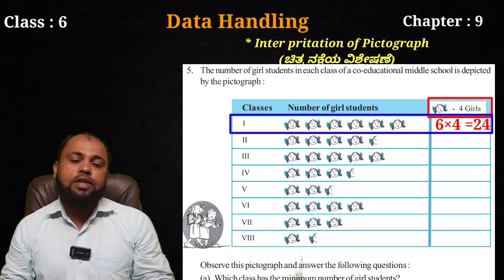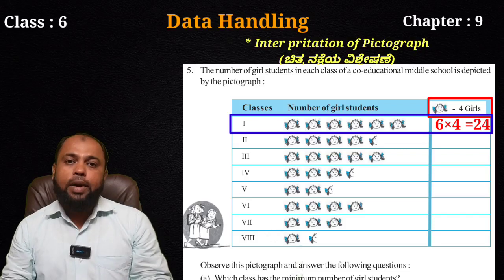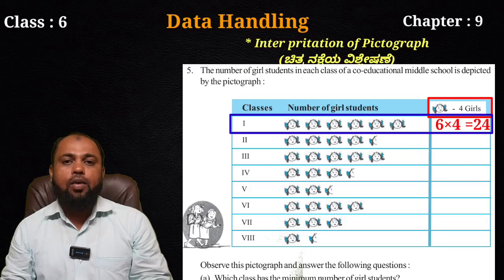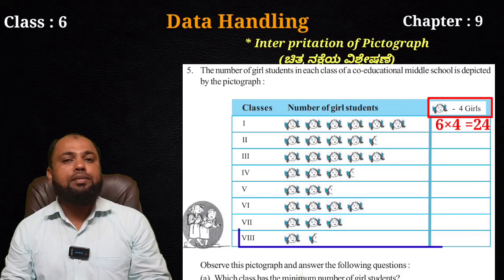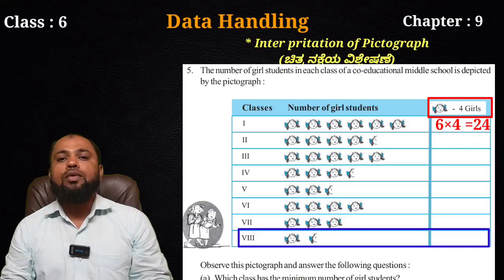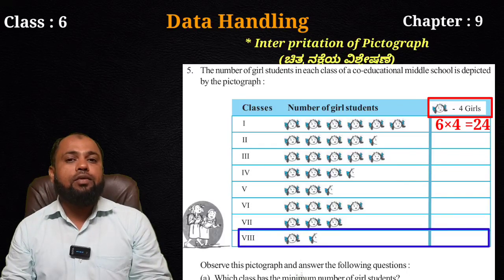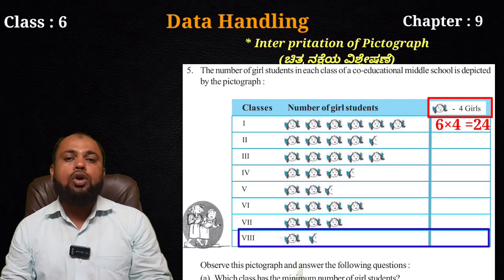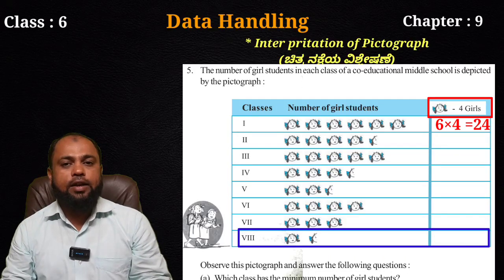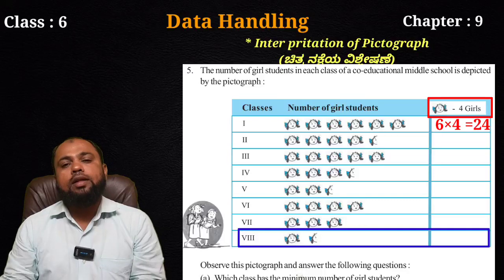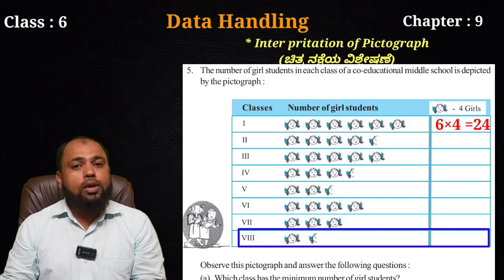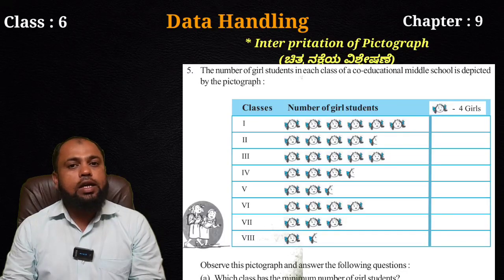The minimum number of girl students is in class 8, where there is only one and a half pictures. For one picture, four girl students; for half a picture, two girl students — so totally six girl students are there in class 8.